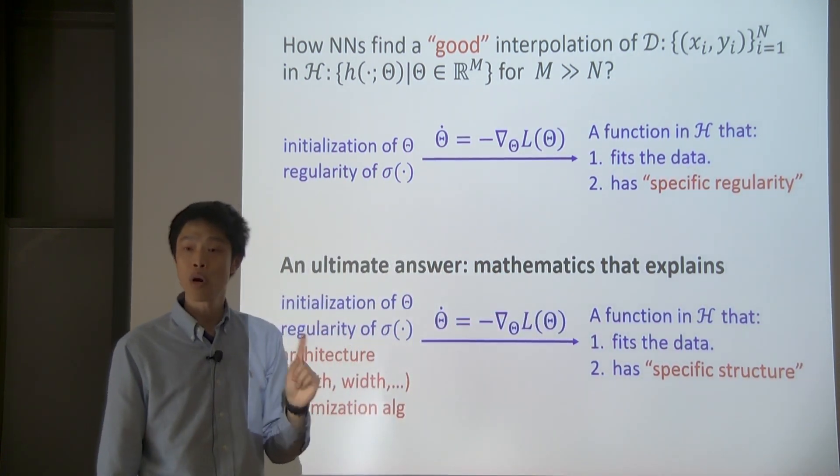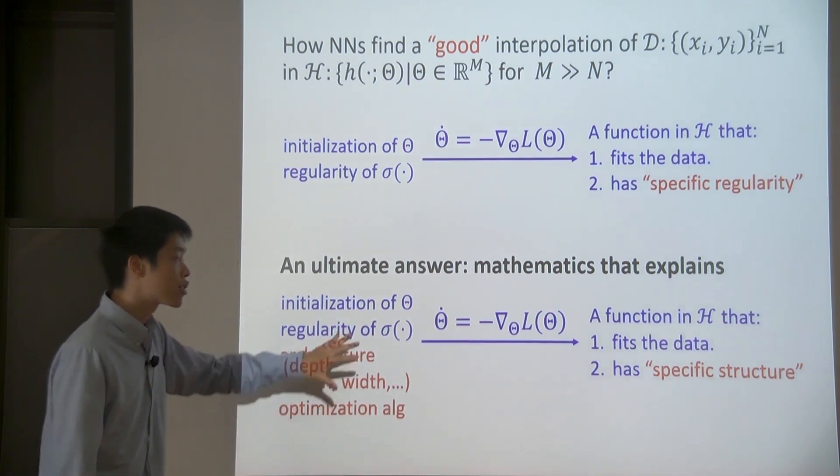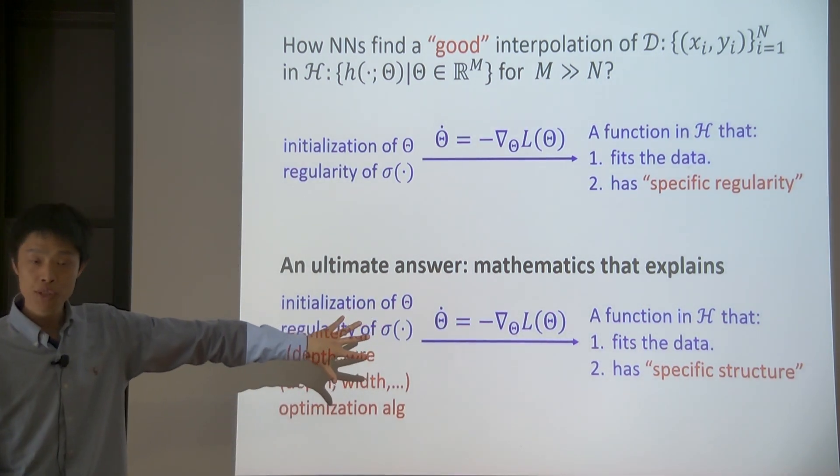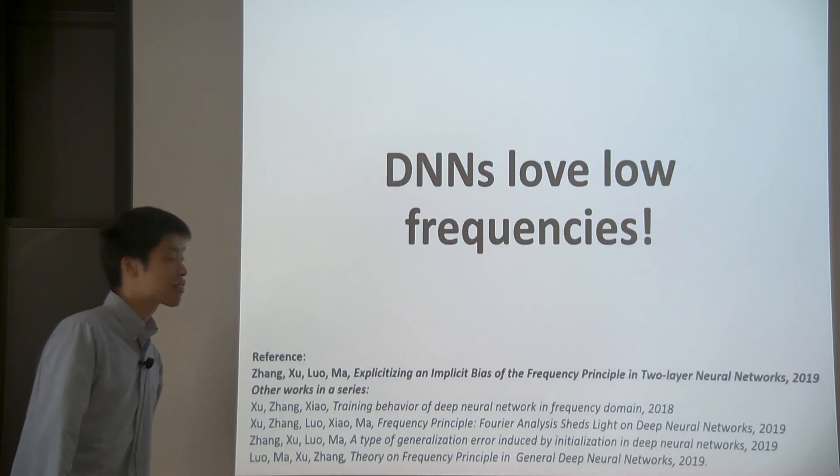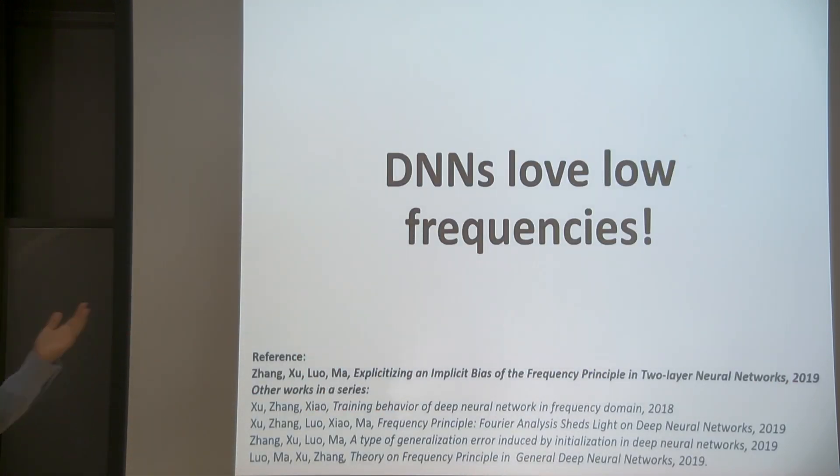So, we are still far from answering that question. But we are making steps. Okay. So, the final piece of information is deep neural network loves low frequencies. And this work is in collaboration with my colleagues, Zhi Qingxu, Zhen Ma, and Tao Luo. And we have a series of work on this topic. Yeah. Thank you.